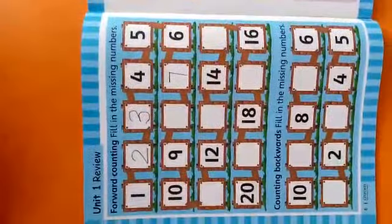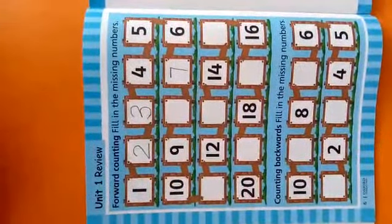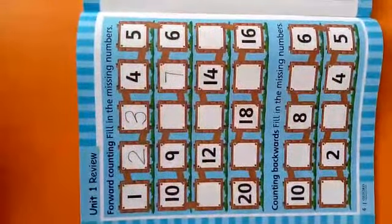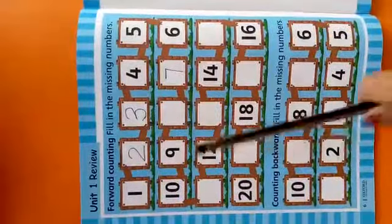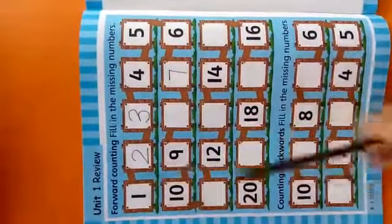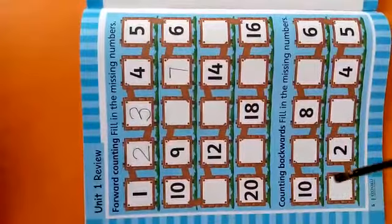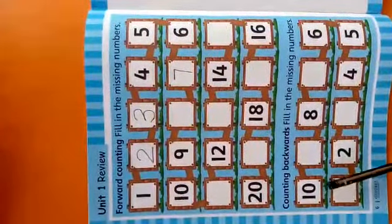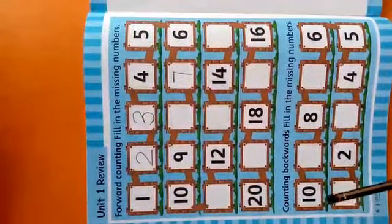Now look at the end. This is backward counting. This is forward counting. Forward counting starts with one and backward counting is starting with the end number. That is ten.